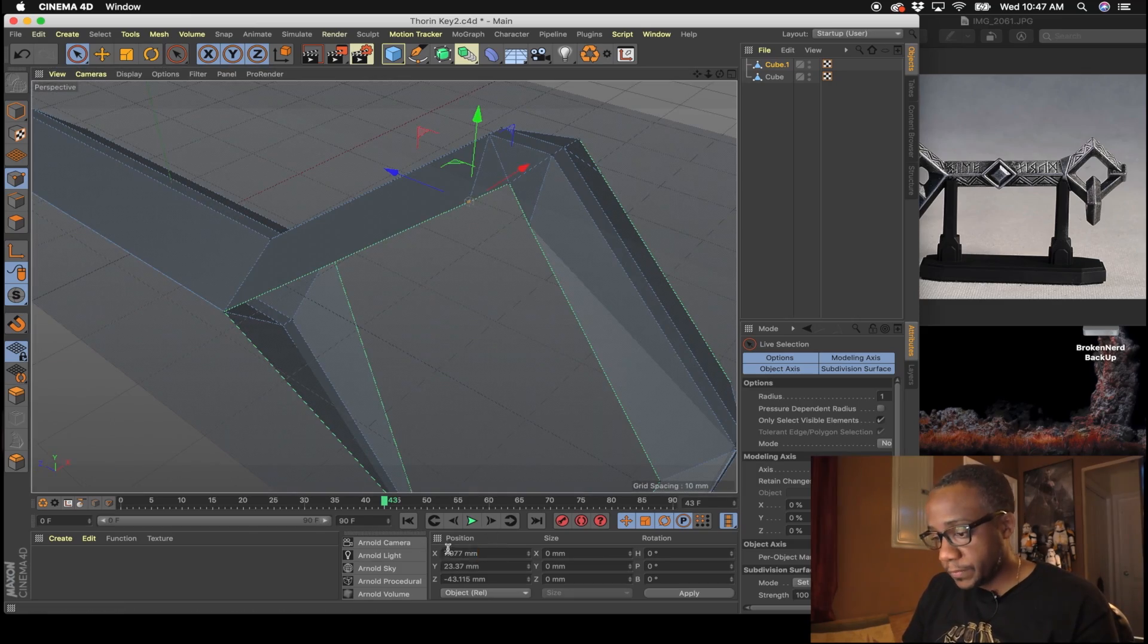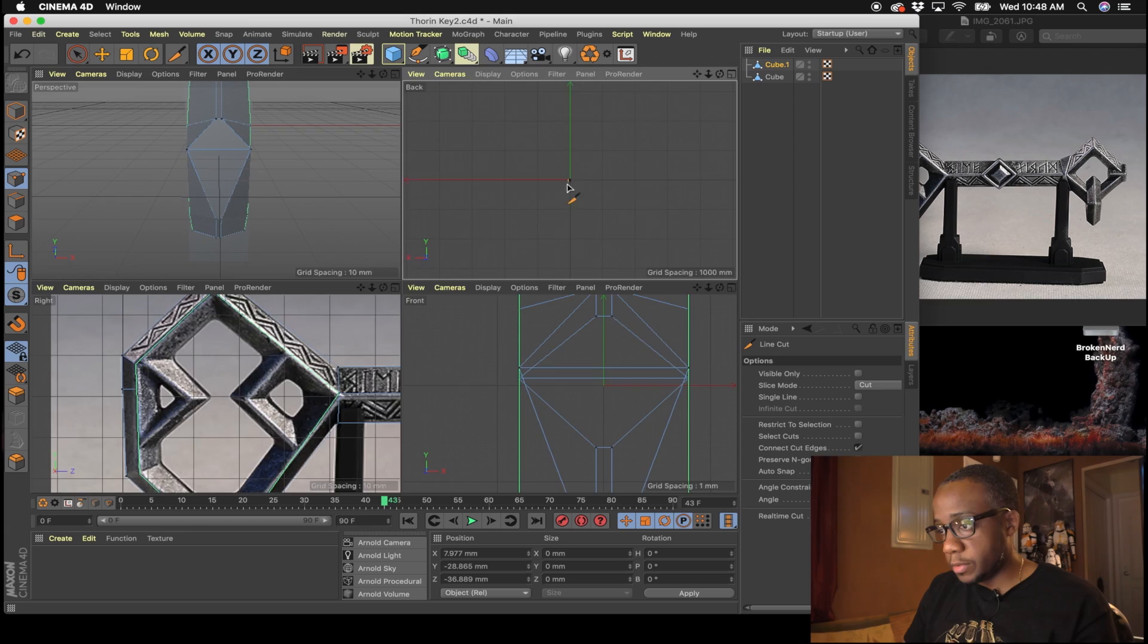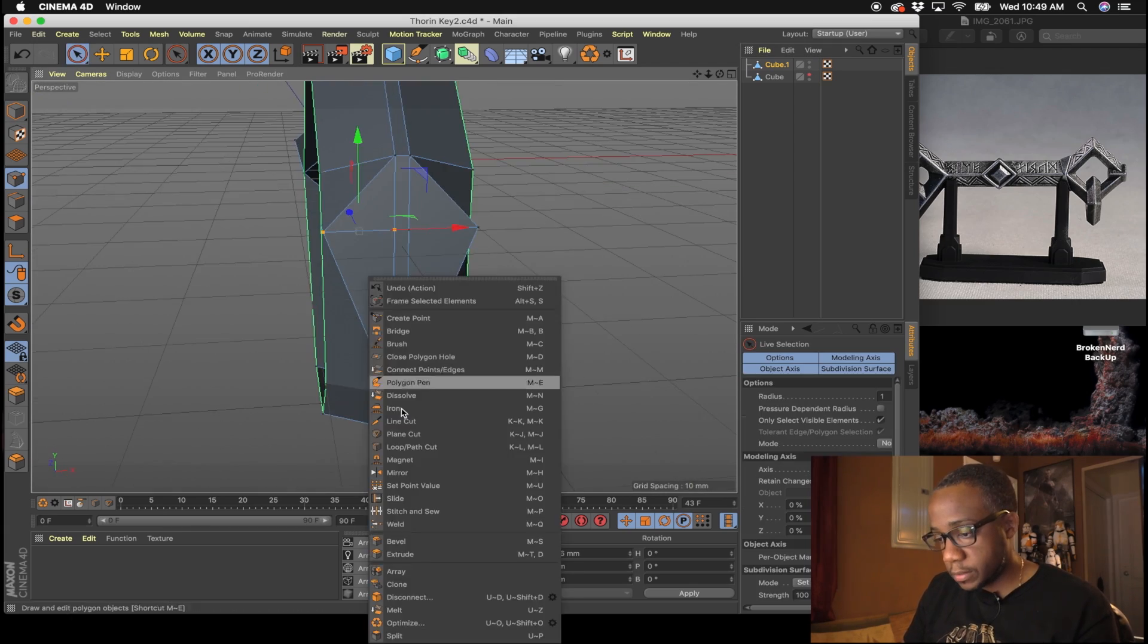In the previous video, I walked you through how I modeled the key in Cinema 4D. But in this video, I'll walk you through how I prepared that file to be printed on a SLA resin printer. I'll also be cleaning up the printed key and preparing it for molding.